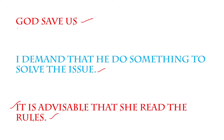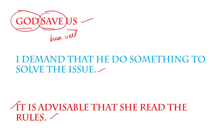Take the first sentence: 'God save us.' God is singular in form, and if the subject is singular, the verb should also be singular. But here the sentence uses only the base form of the verb. Why? And here: 'I demand that he do something.' We have learned from our school days onwards that after 'he,' we have to use the singular form of verb. But here we use the plural verb 'do.' Why?